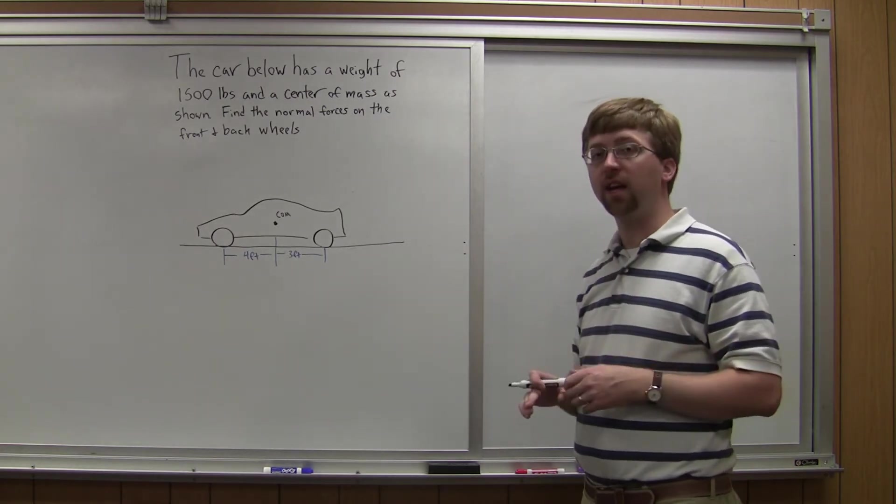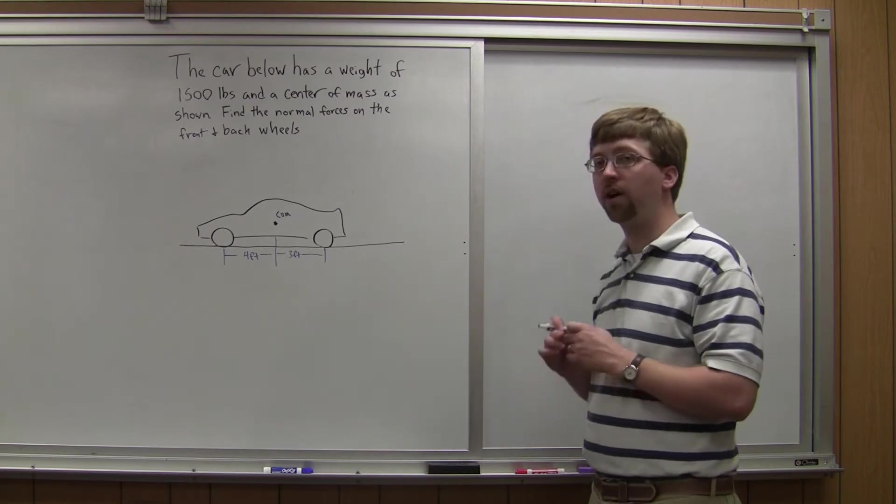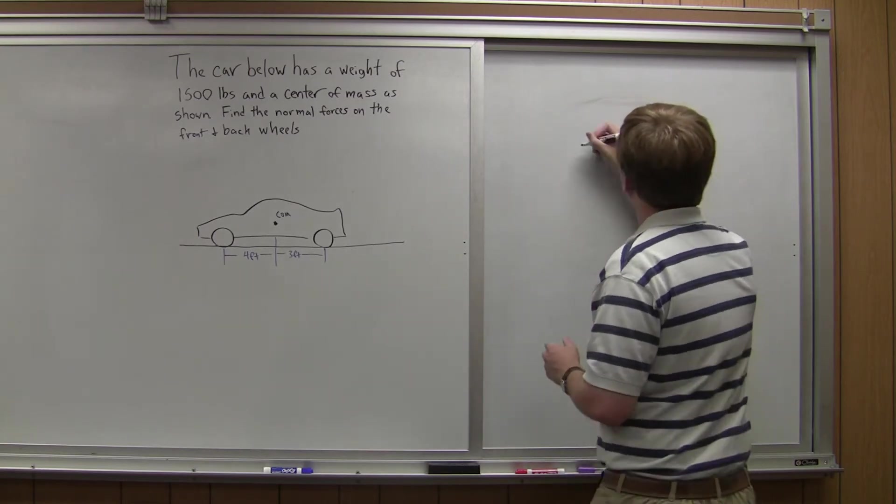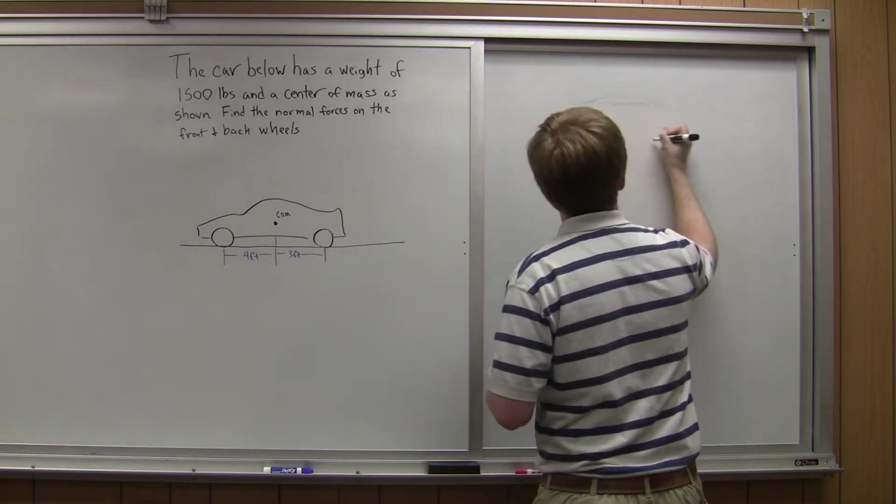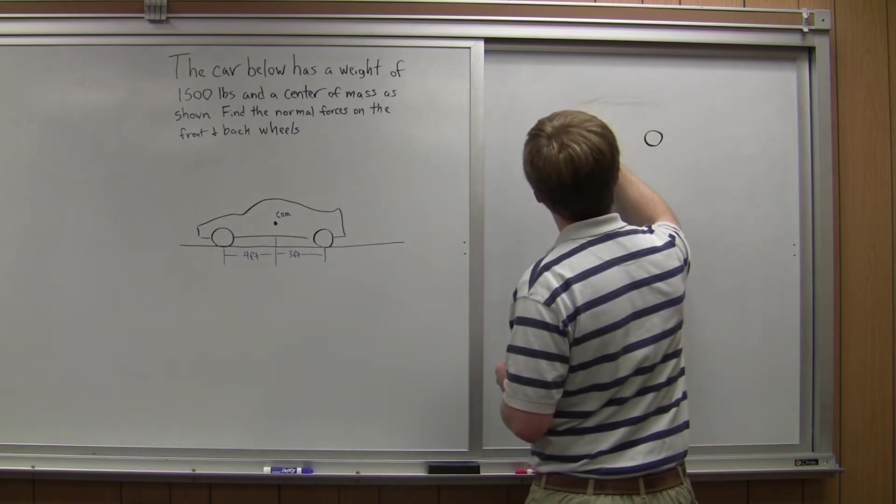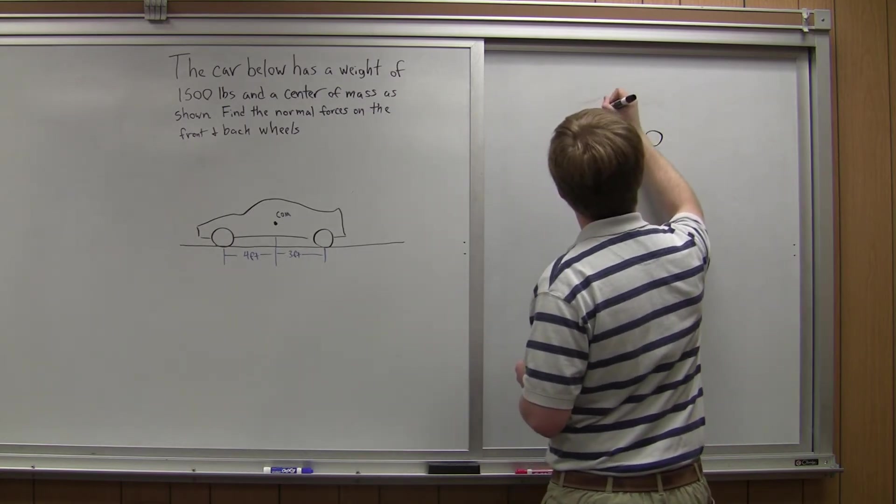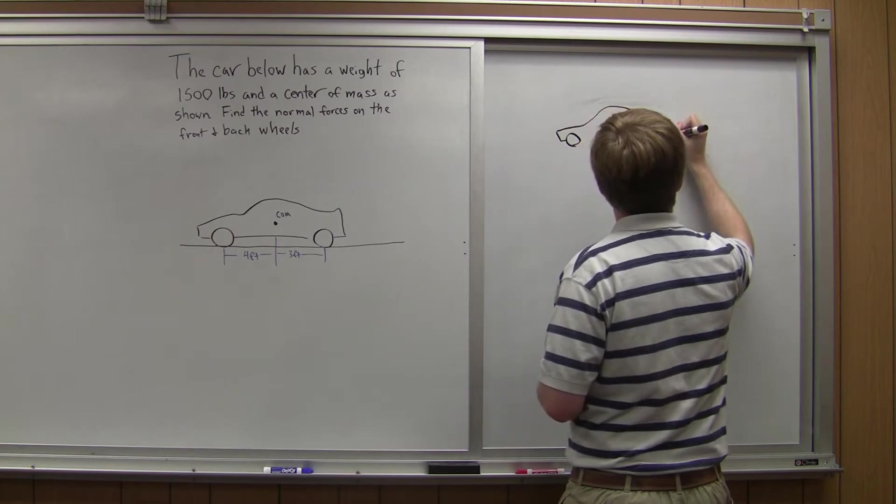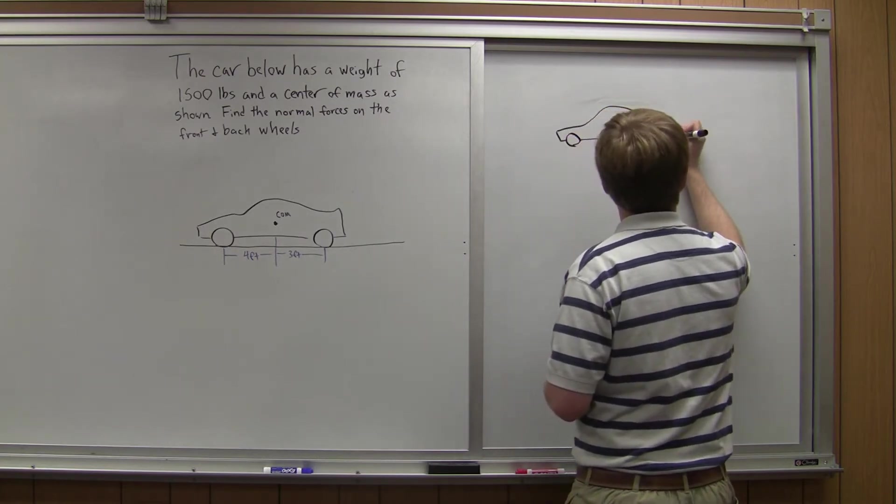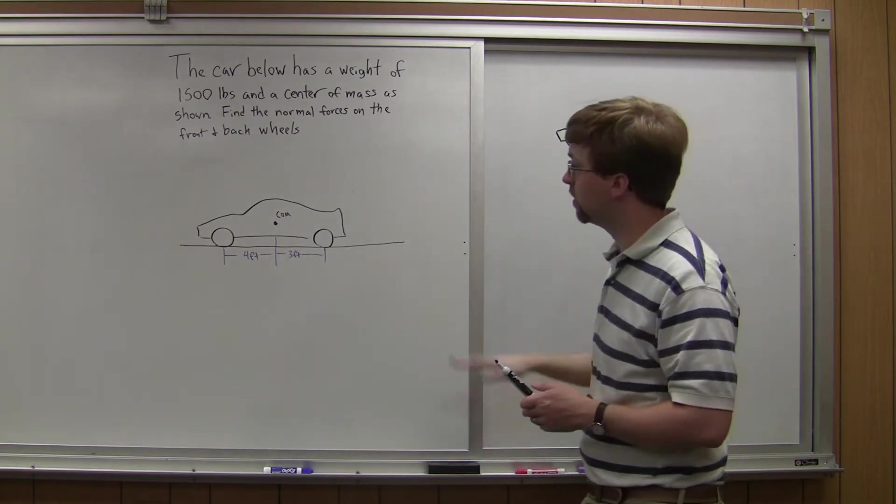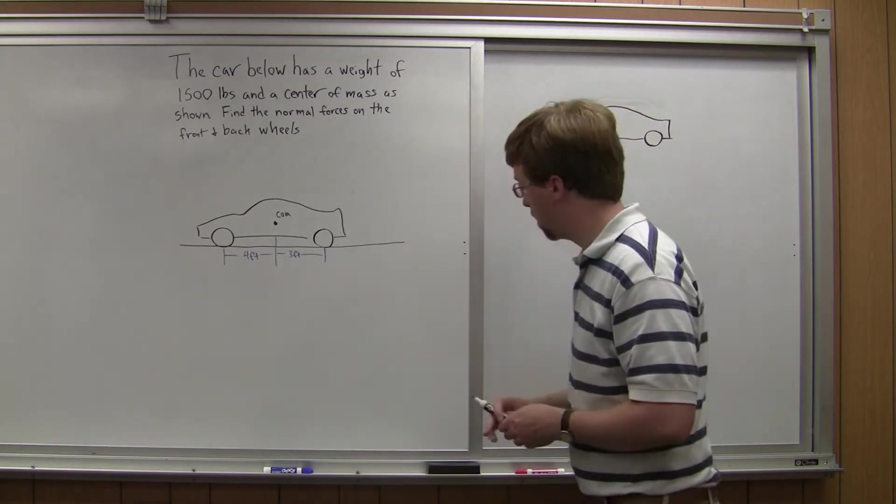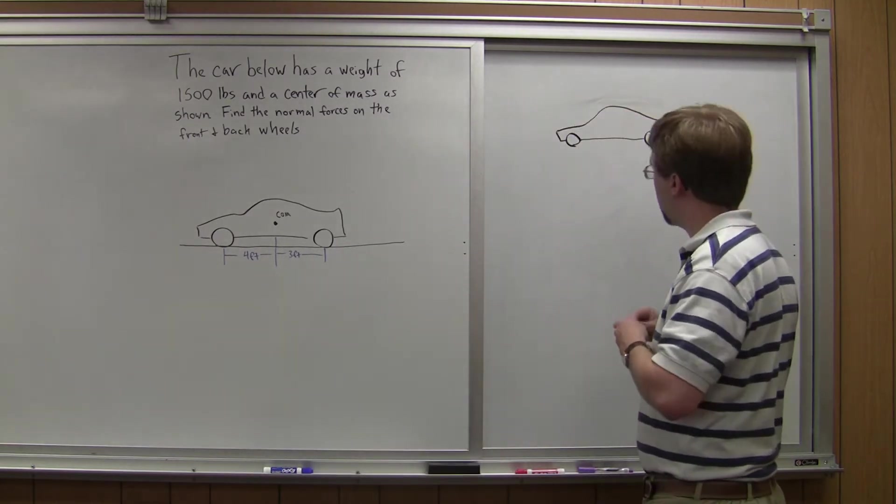So first thing in any equilibrium problem is to draw out the free body diagram. So if I go ahead and draw out this car, I'm going to separate it from the background. So in this case I've removed the road itself and I'm going to draw in all of my forces.